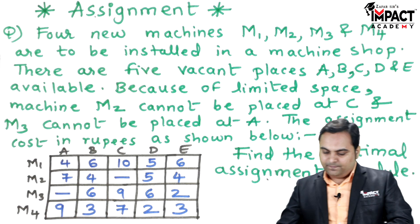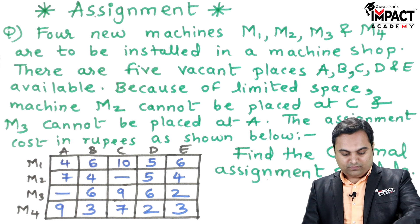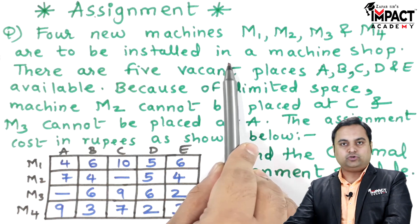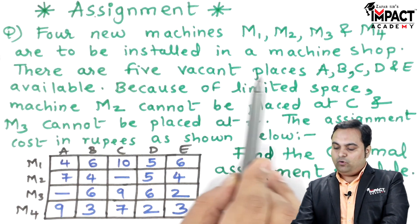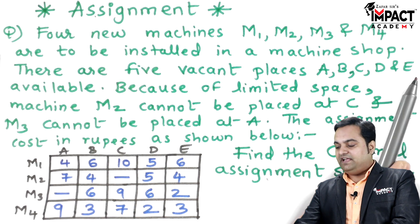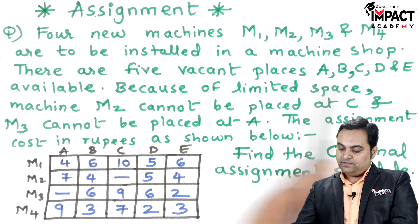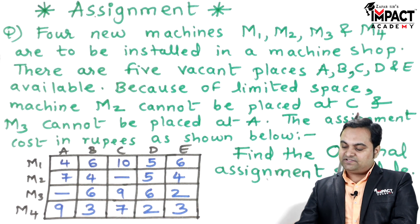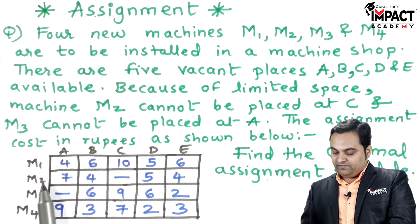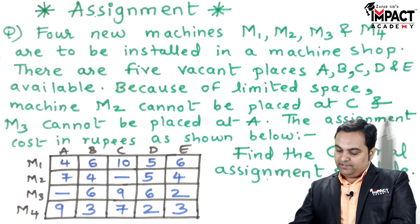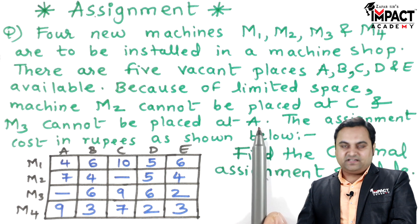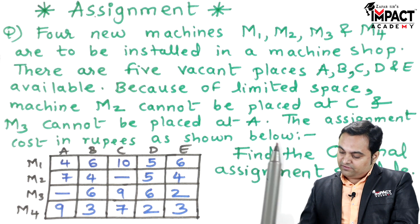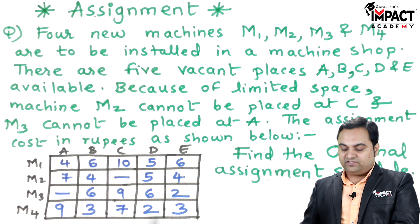Here is the question in front of us. It is given that four new machines — M1, M2, M3, and M4 — are to be installed in a machine shop. There are five vacant places: A, B, C, D, and E. So for four machines there are five vacant places available. Due to limited space, machine M2 cannot be placed at C, and machine M3 cannot be placed at location A. These are the restrictions.